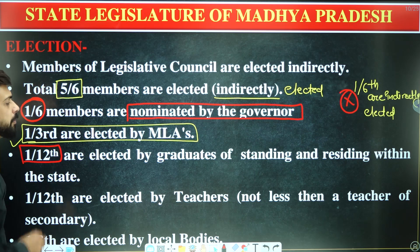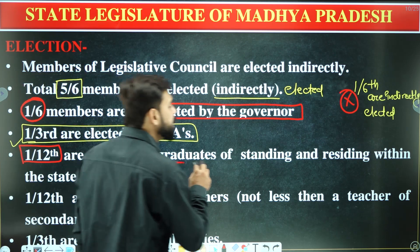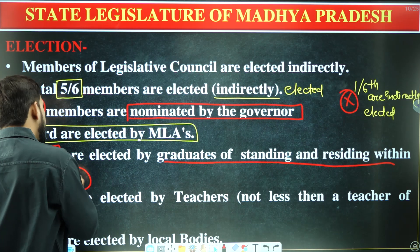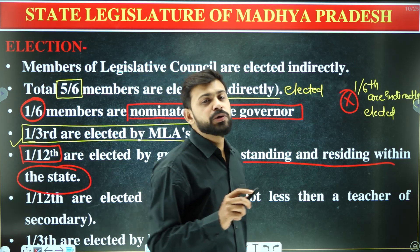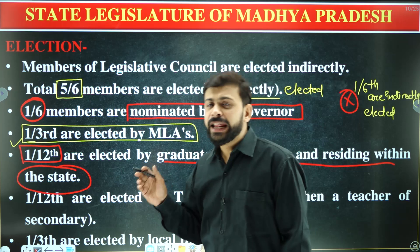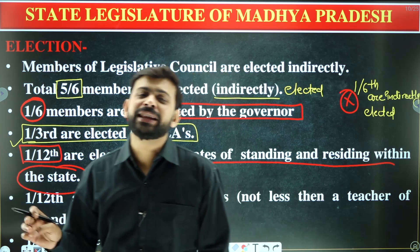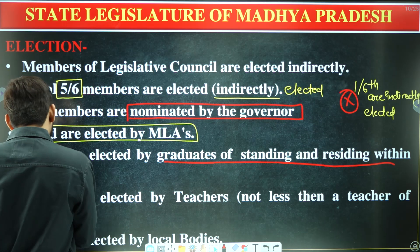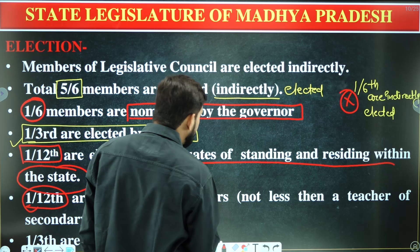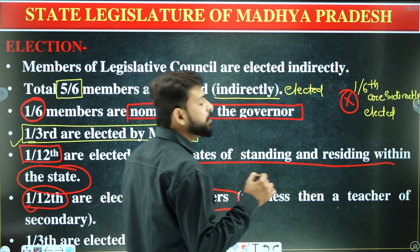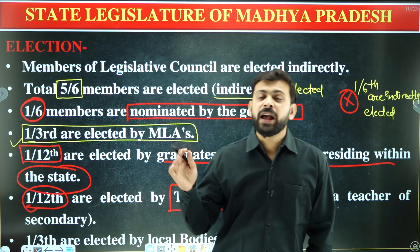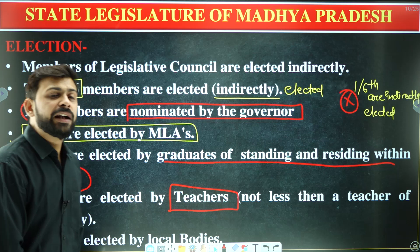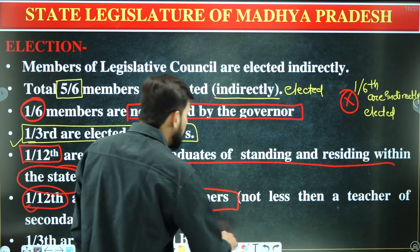One-third of the members are elected by MLAs (Members of Legislative Assembly). One-twelfth of the members are graduates standing and residing within the state. Another one-twelfth are elected by teachers — these teachers must be from higher secondary school or above. One-third are elected from local bodies.